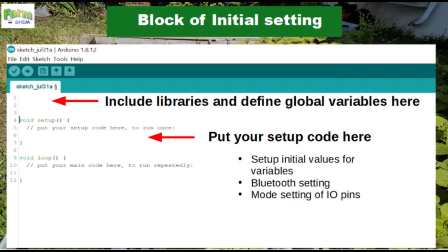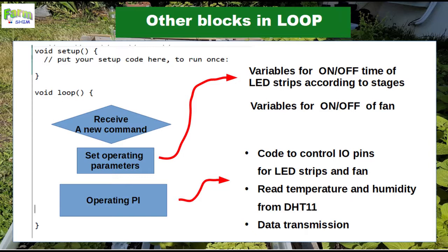Here is a template of program code in Arduino IDE. You can write library files and global variables at the top of the template. And then you put the setup code in the setup function, as shown in the image. In the setup function, you initialize internal functions, the mode of IO pins, and values of variables.